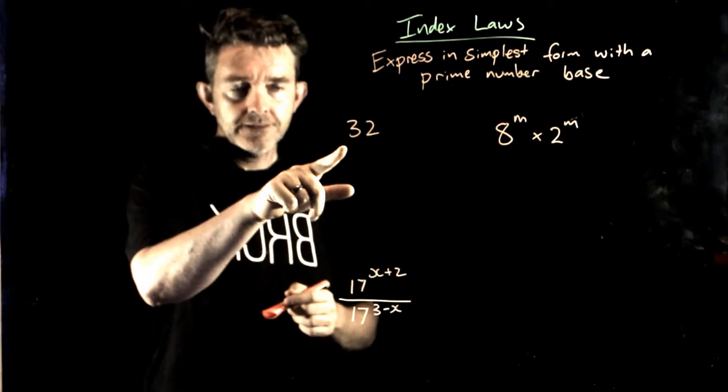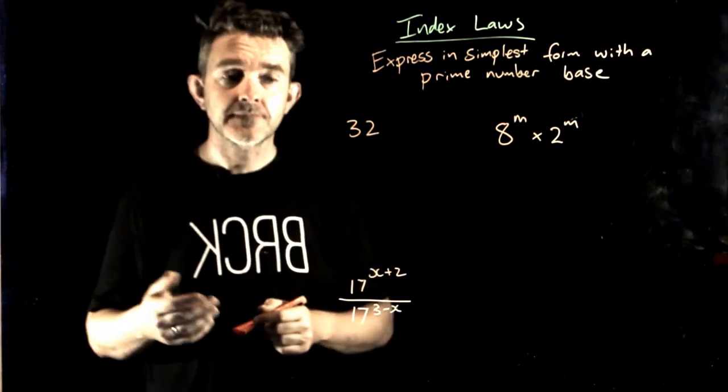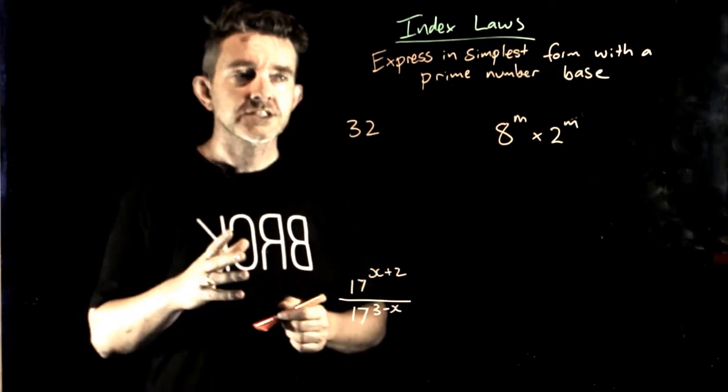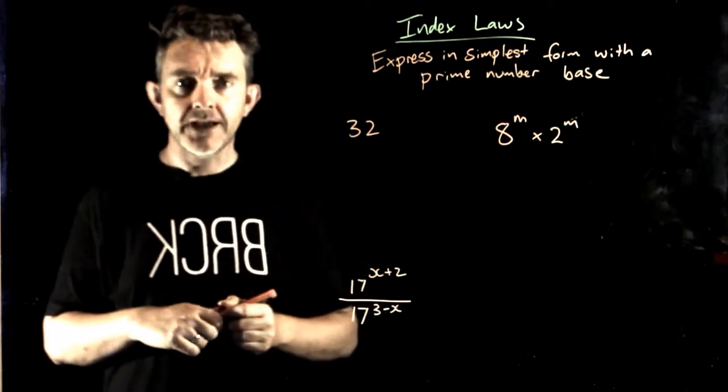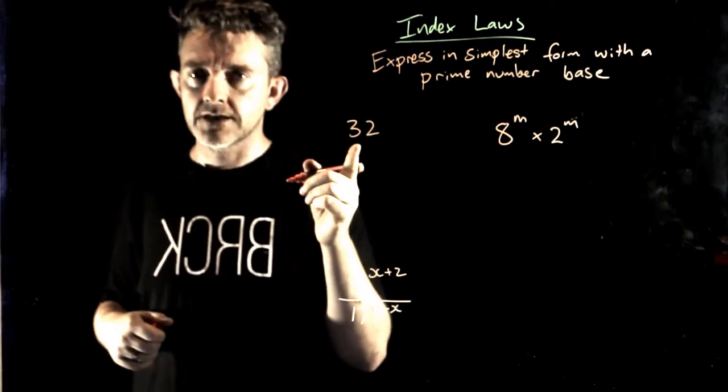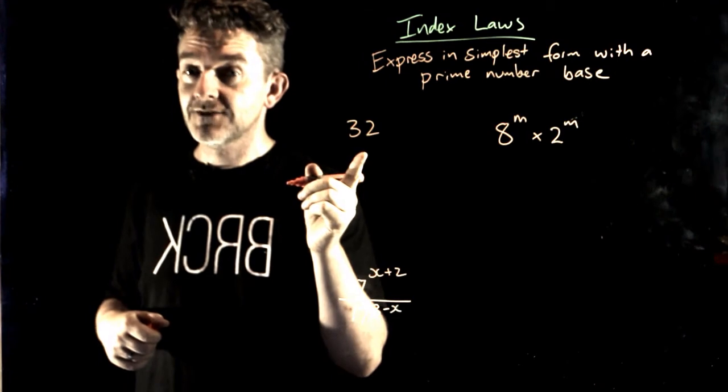So I've got the number 32 here. 32 is not a prime number. What would the prime number base be? Now if you remember back, we can go to prime factors with this.